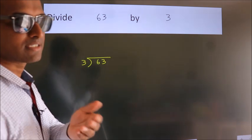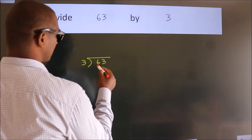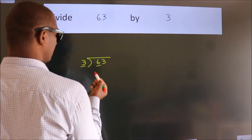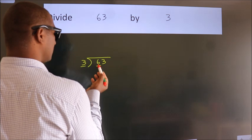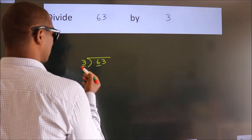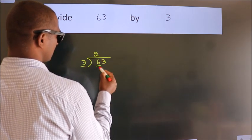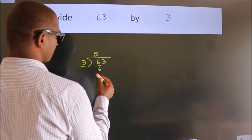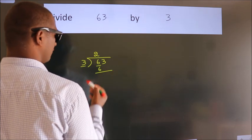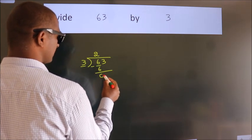Here we have 6, and here 3. When do we get 6? In the 3 times table — 3 twos are 6. Now we should subtract. We get 0.